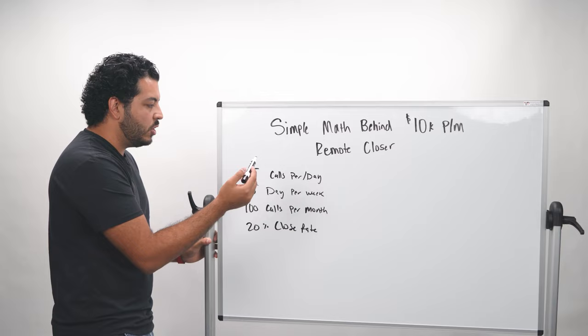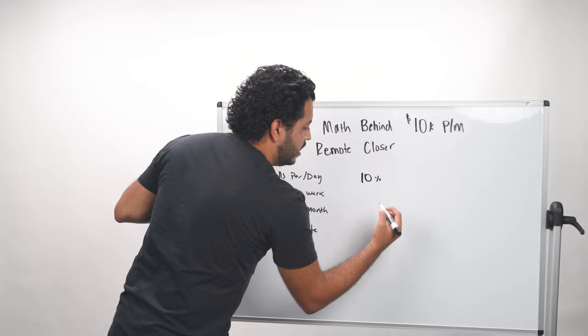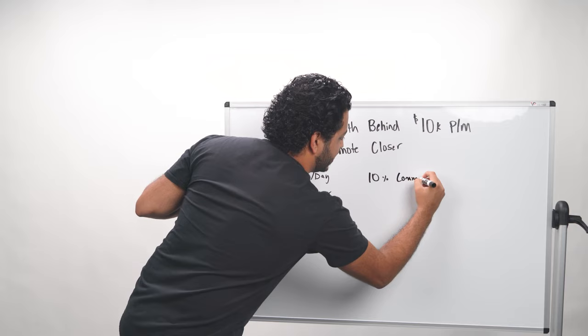Right? So 20% close rate. So that's five calls per day, five days out of the week, a hundred sales calls per month, and you're closing at 20%. So let's just say that again, across the board, industry standard, you're going to make about 10% of the offer, or of the cash collected. So let's say 10% commission on a 5k offer.